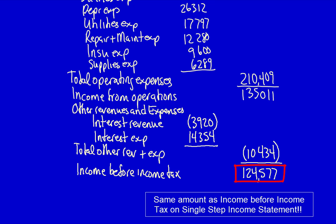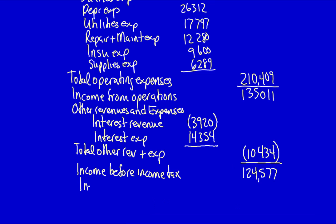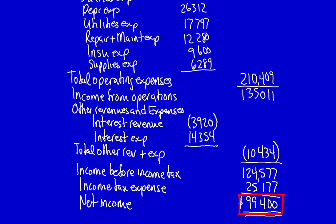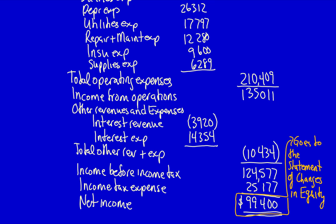If you go back to the single step income statement you'll see that income before income tax is exactly the same amount. Income tax expense is also the same as in the single step income statement: $25,177. The final line, net income, is $99,400. Note that the multiple step and single step income statements result in the same ending income — we're using the exact same accounts, just placing them in a different order. The net income at the bottom is always carried forward to the statement of changes in equity, which will be the topic of the next video.